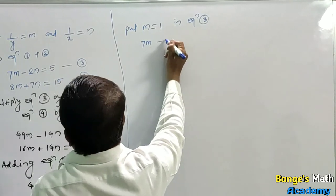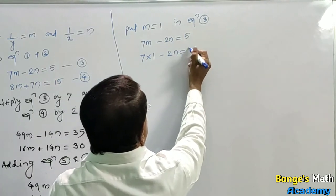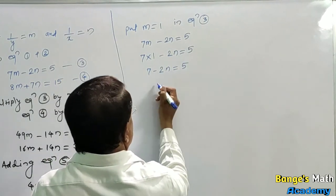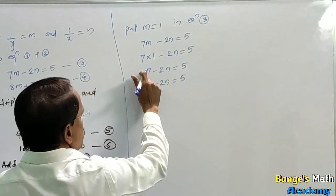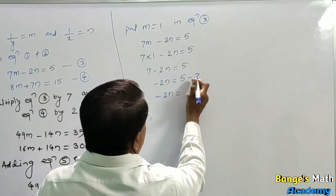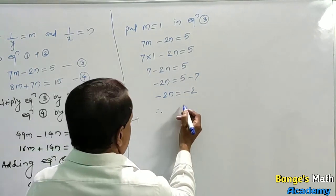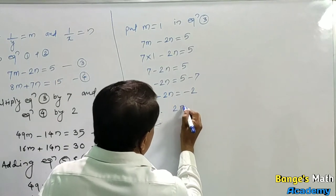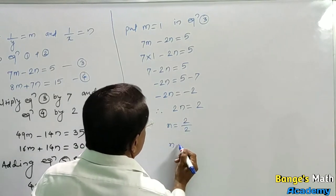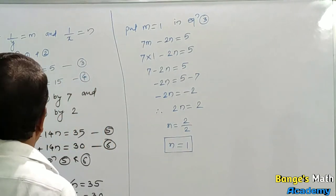Put m equal to 1 in equation 3: 7 into 1 minus 2n equal to 5 gives 7 minus 2n equal to 5. Transfer 7 to RHS: minus 2n equals 5 minus 7 equals minus 2. Multiplying both sides by minus 1: 2n equals 2. Transfer 2 to RHS: n equals 1.